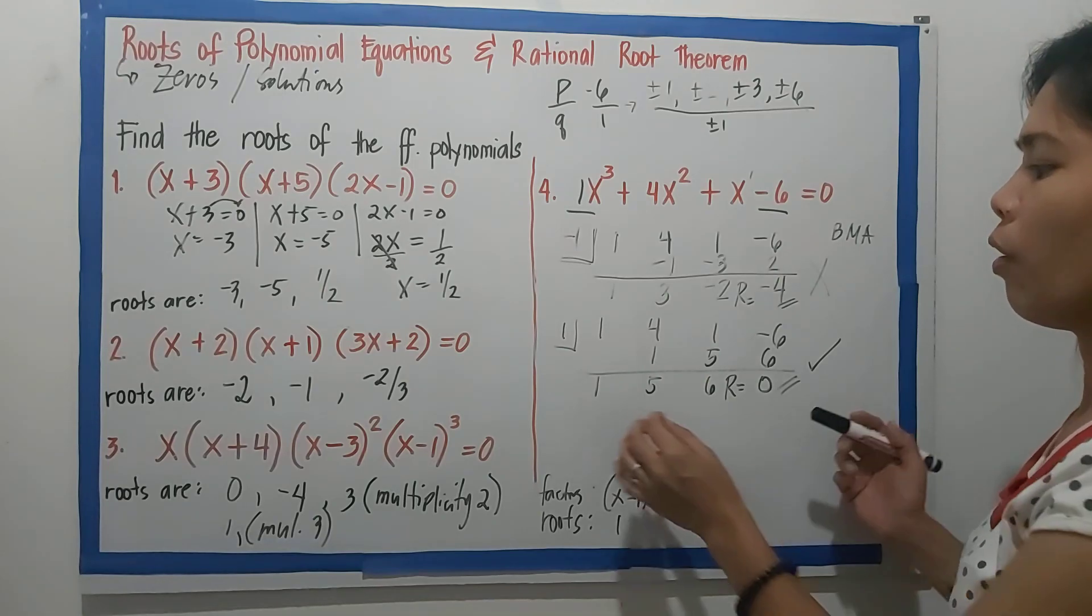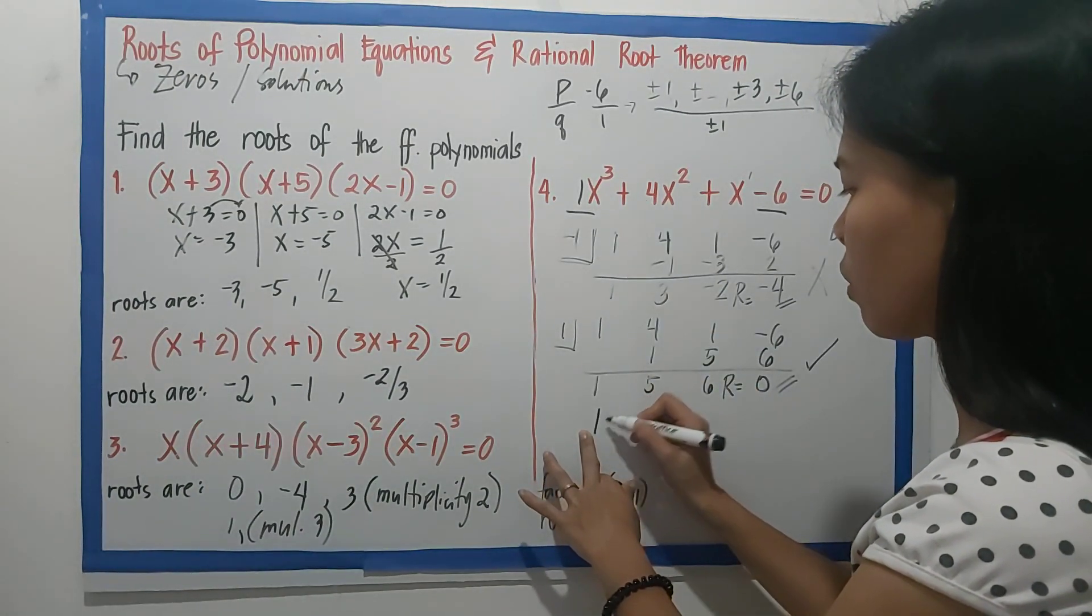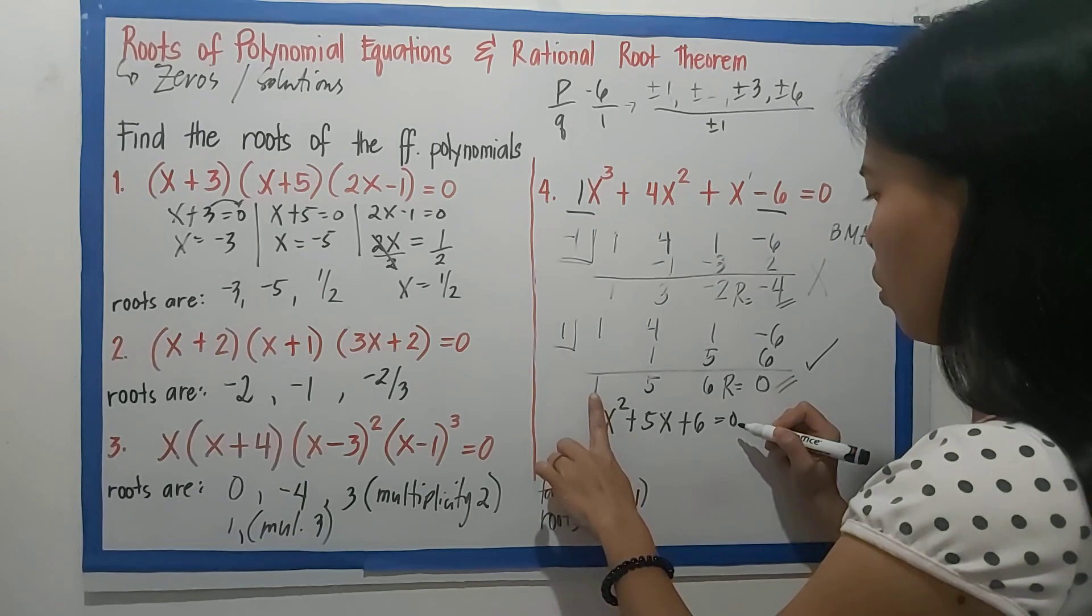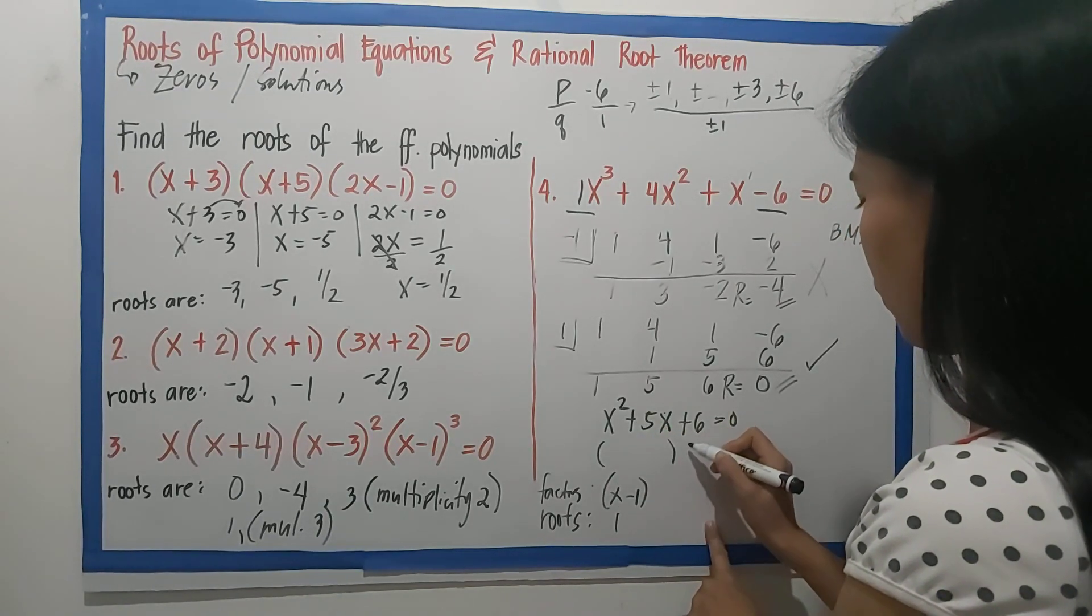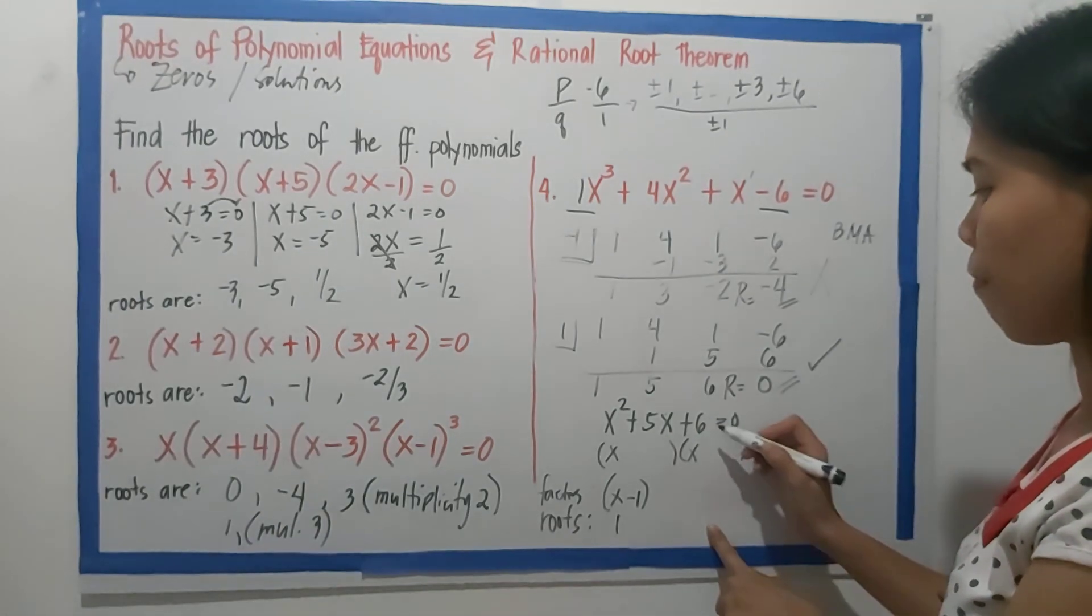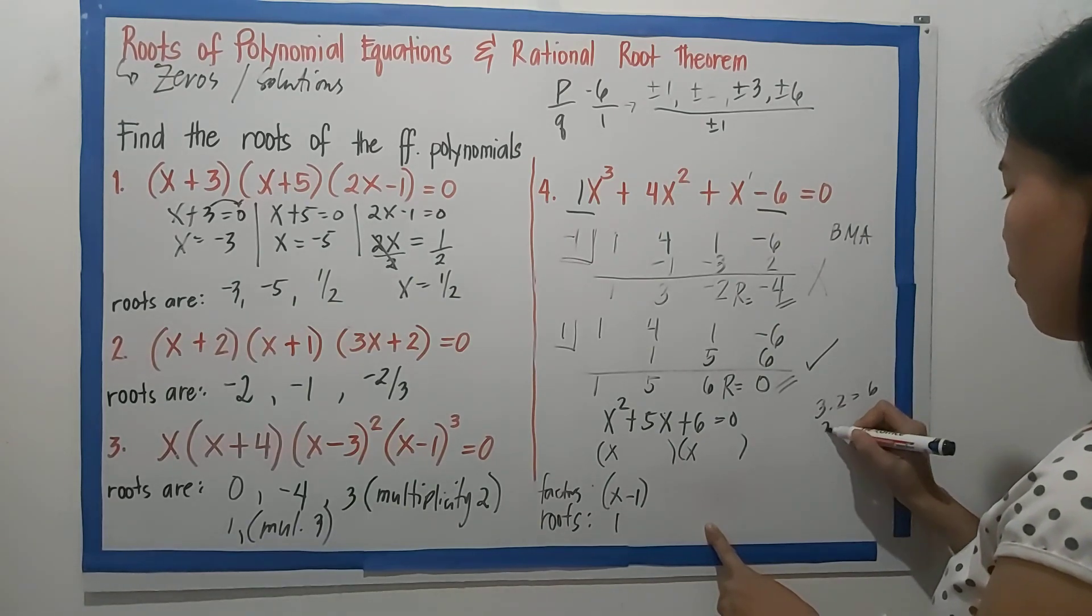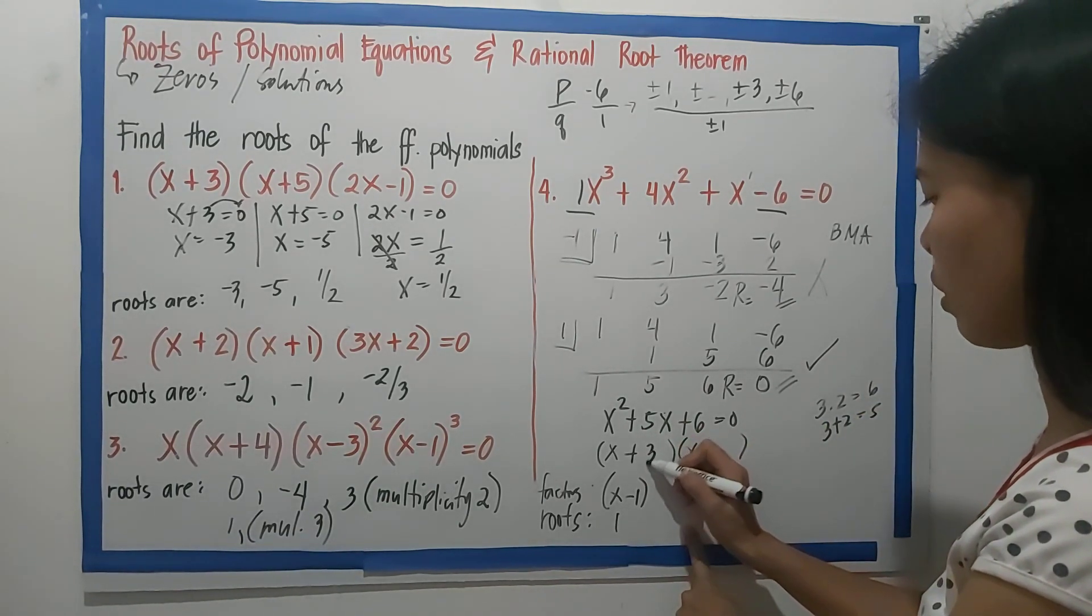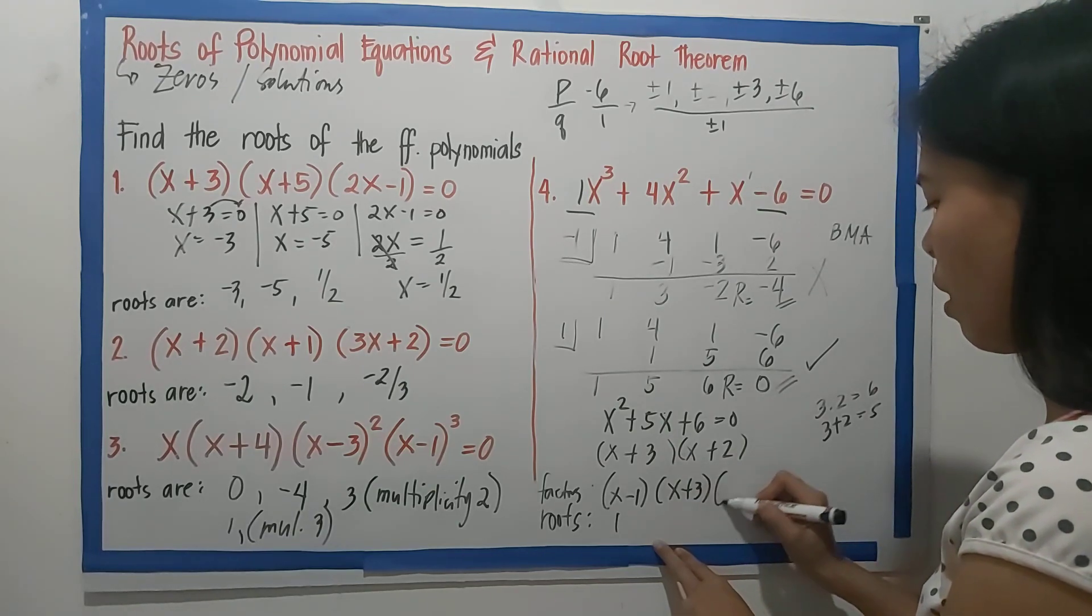Now, going back to our synthetic division, we have our depressed equation. 1, 5, 6 are our coefficients. So, from cubic, it becomes quadratic. x²+5x+6=0. Now, since it's quadratic, we can use factoring. In factoring, we'll find factors of x², that's x and x. Factors of 6 that when added become 5. Those are 3 times 2, that's 6. 3 plus 2, that's 5. So, x+3 and x+2. This is the factored form.